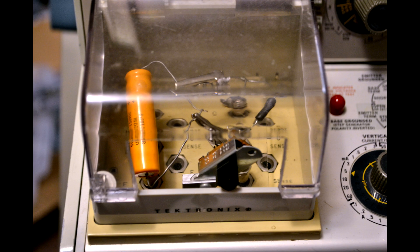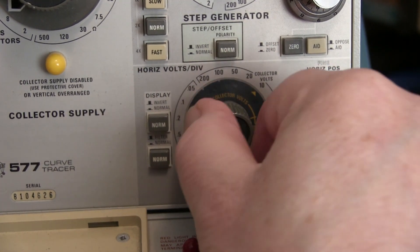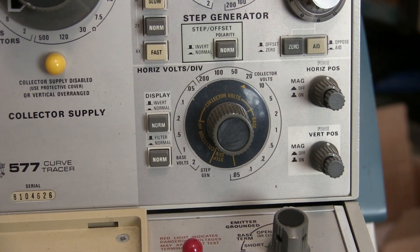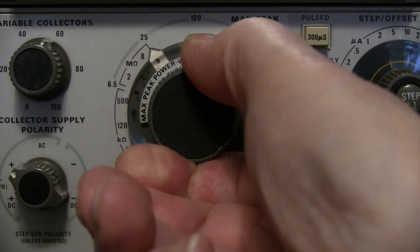Set the curve tracer for normal sweep in NPN collector positive mode. Set the horizontal volts per division according to the maximum voltage at which the capacitor will be tested. Set the maximum collector sweep range according to the maximum working voltage of the capacitor.